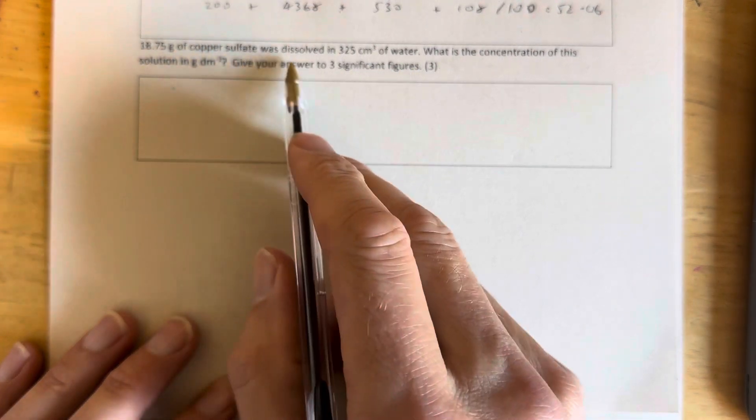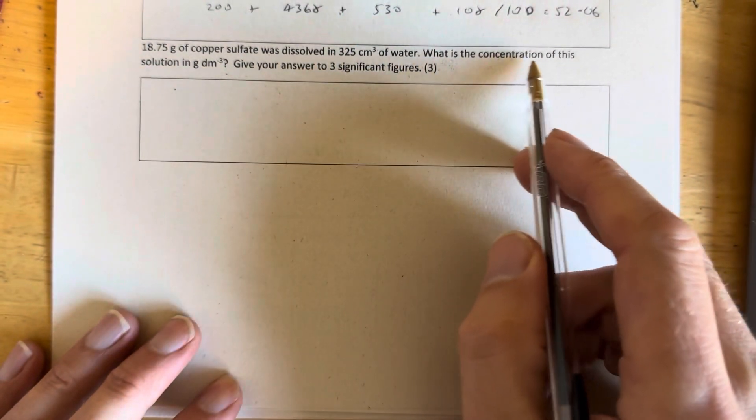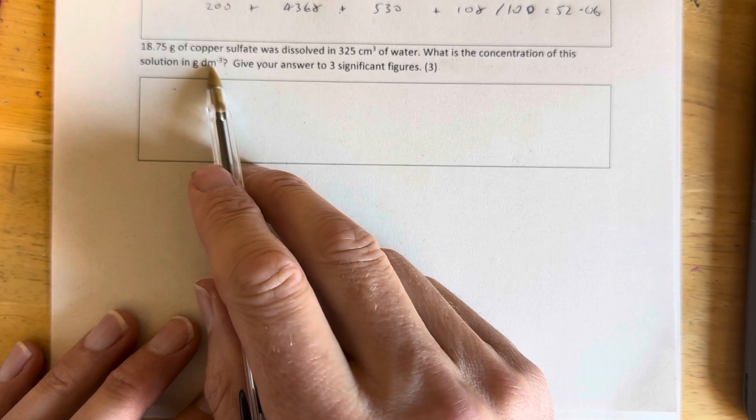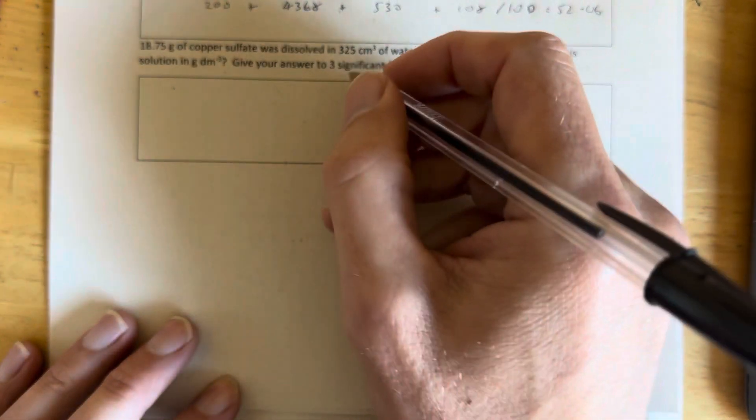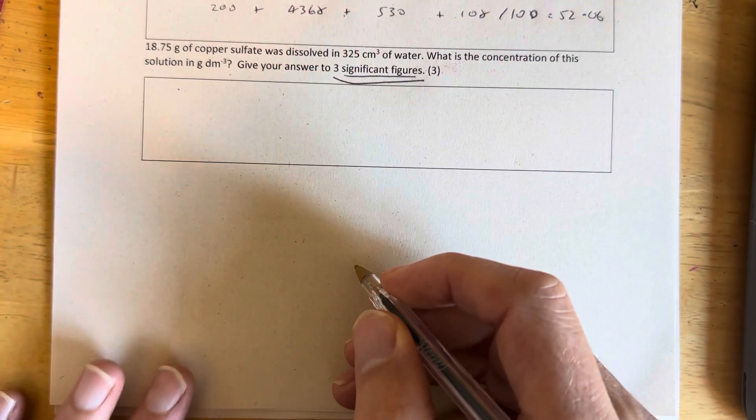18.75 grams of copper sulfate was dissolved in 325 centimetre cubed water. What's the concentration of the solution in grams per decimetre cubed? Give our answer to three significant figures. Let's just underline that straight away because so many people do the calculation and forget to do that.